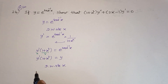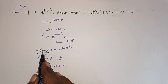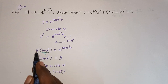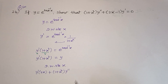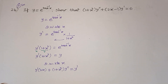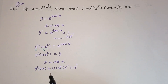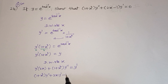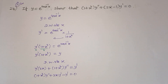So y' = 1 by (1 + x²). Cross multiplying: (1 + x²) y' = e to the power tan inverse x. Differentiating again, y'' — applying product rule on the left side — gives (1 + x²) y'' + 2x y' minus y' = 0.